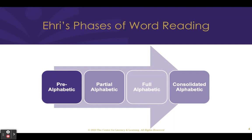There are two terms that we will use during this presentation that are important. First, a phoneme is the smallest unit of sound. The second term is grapheme. A grapheme is a letter from our writing system. These will be important terms as we dive into Ehri's phases.